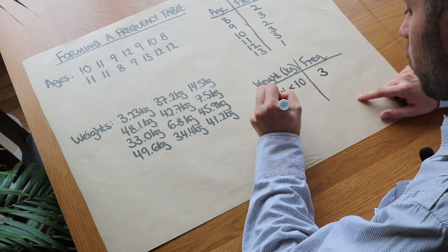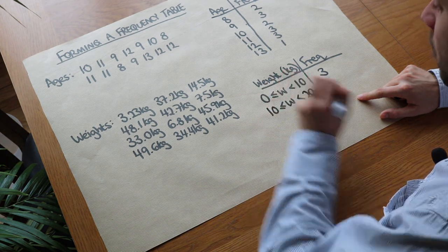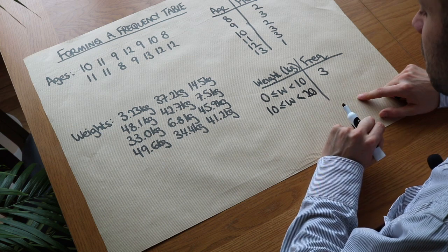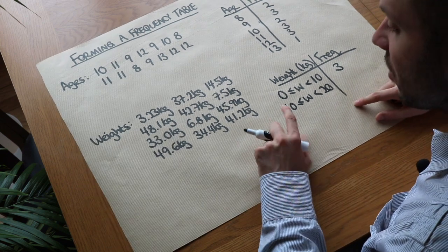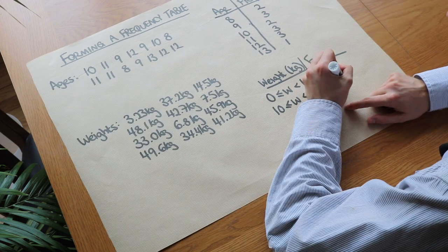What about a weight between ten and twenty? And usually by the way these would be written for you just to make it a bit simpler. So how many people had a weight between ten and twenty? One. Just one. So that is one.